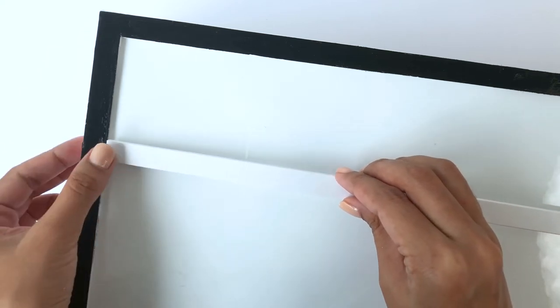Now apply some glue on the thinner strip and stick it at 2.5 inches away from the border.